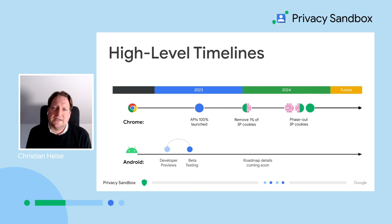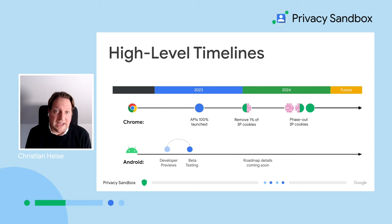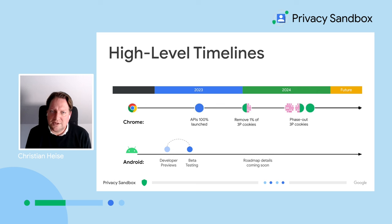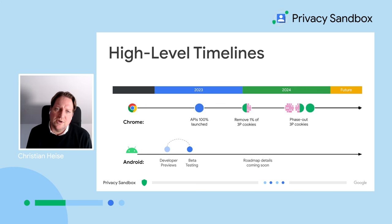All the APIs we have shared with you have been generally available since 2023. This means that you and your businesses probably have already or can already start testing, trialling and implementing these APIs. You may know that in January 2024 we began to phase out 1% of third-party cookies. Later this year, in close consultation with the Competition and Market Authority, we will begin to phase out third-party cookies entirely, starting in Q3 2024. On Android, please stay tuned — we will share a similar roadmap for the mobile ecosystem.